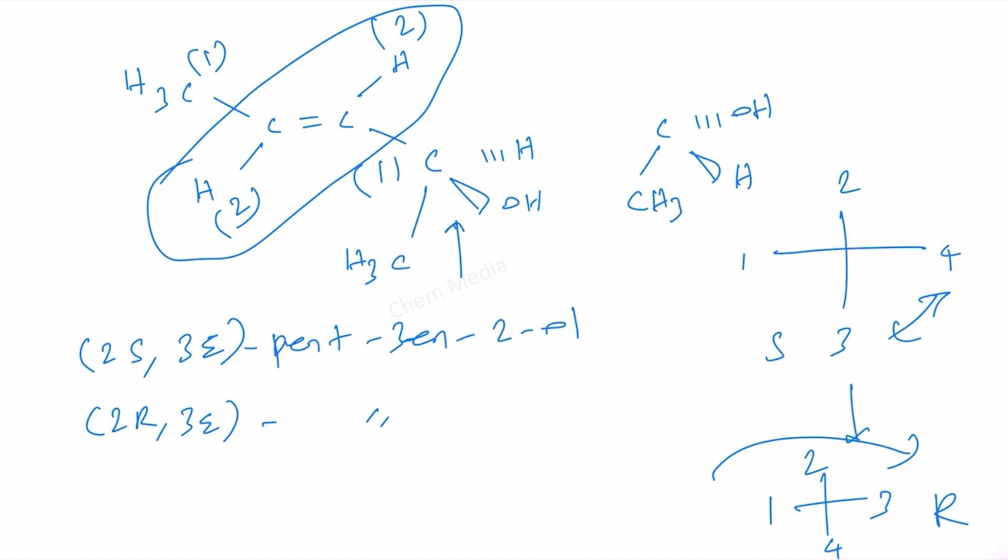On the contrary, once you put both the hydrogen atoms on the same side, then we can get 3Z,2R, that is another isomer. We can also get 2S,3Z-pent-3-en-2-ol. That's why four isomers here.